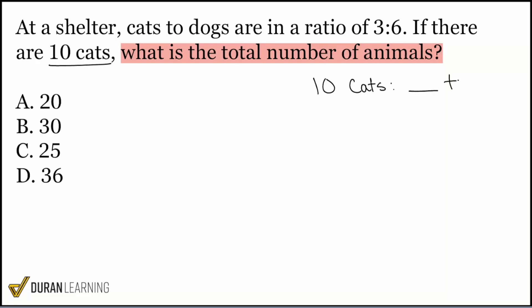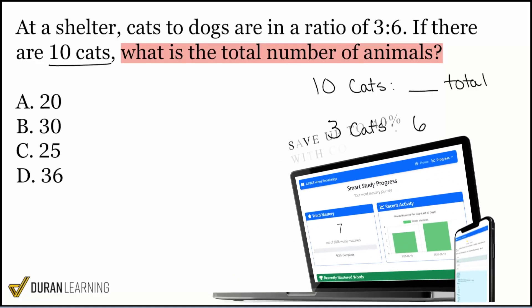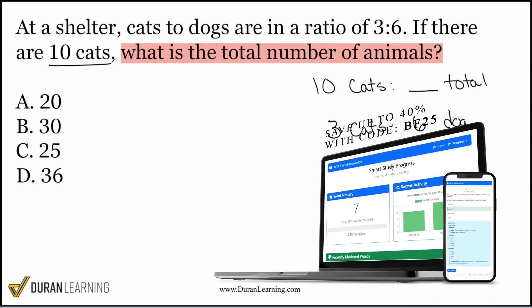So we have 10 cats and we're comparing that with a blank total. Let's see if we can get this done without too much extra work. It says at a shelter, cats to dogs are in a ratio of three to six. Read that again — cats to dogs, not cats to total. Cats to dogs — be very careful. So if we say three cats, that's correct, but if we say six dogs, you have to understand that this represents dogs.